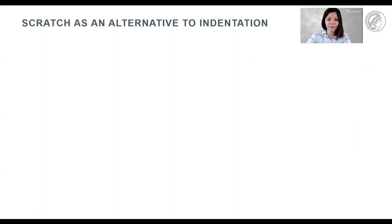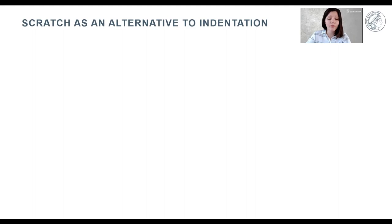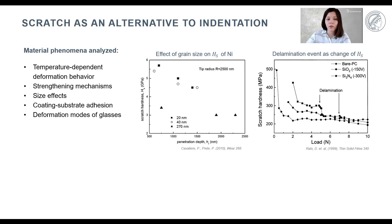We all know that indentation experiments are commonly used to study hardness of materials, and with that many material-related phenomena. The scratch experiment is another versatile tool for such studies. For example, you can see here how the change of scratch hardness can be related to the change of grain size and the delamination event of a film. This is why we can consider the scratch experiment to be an alternative to the indentation test.